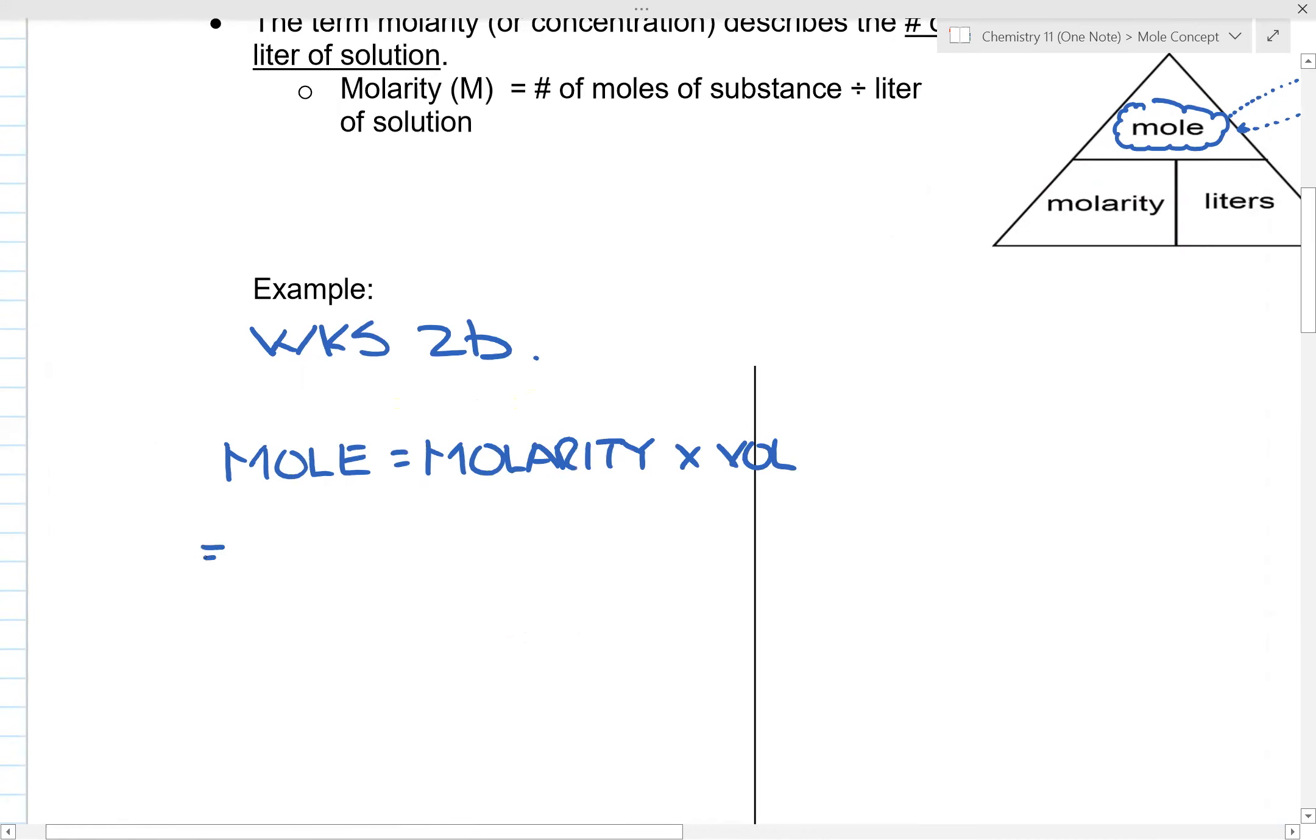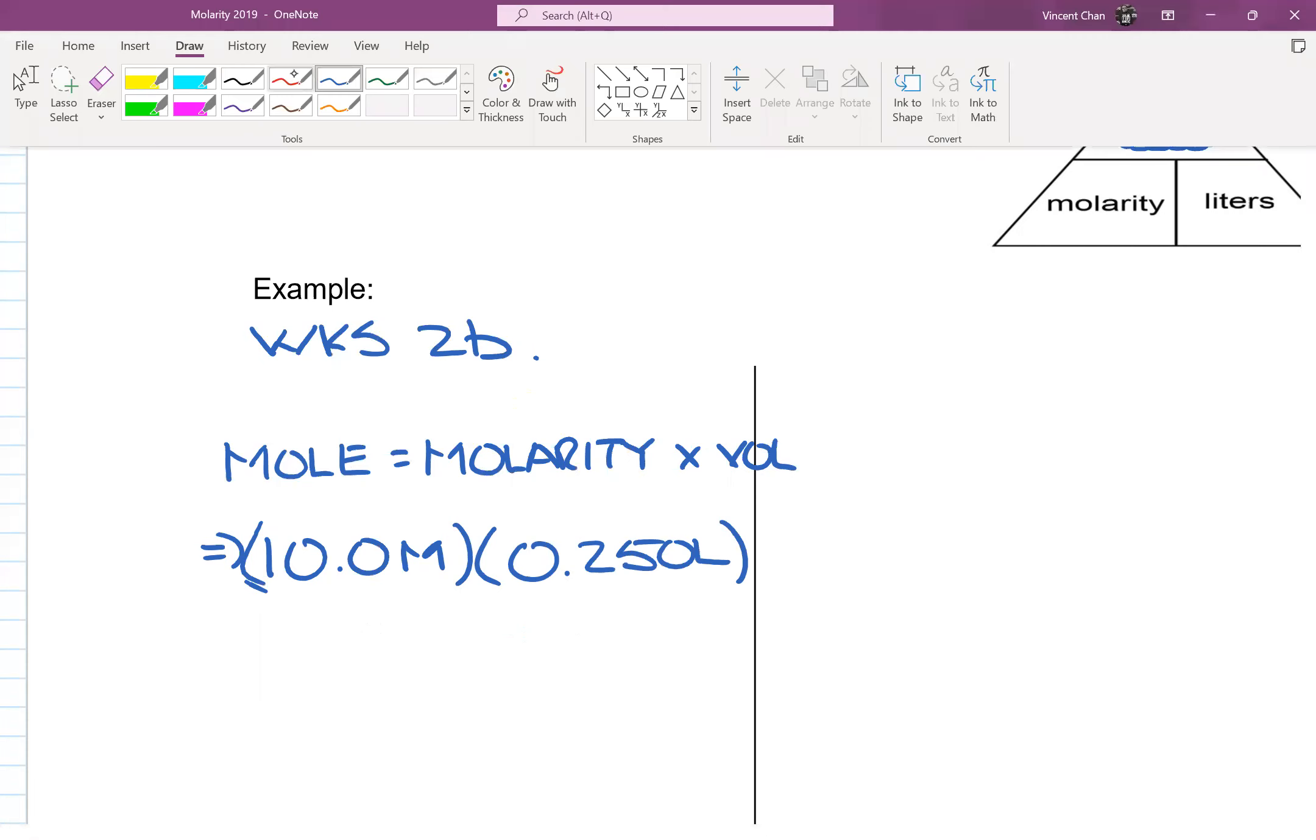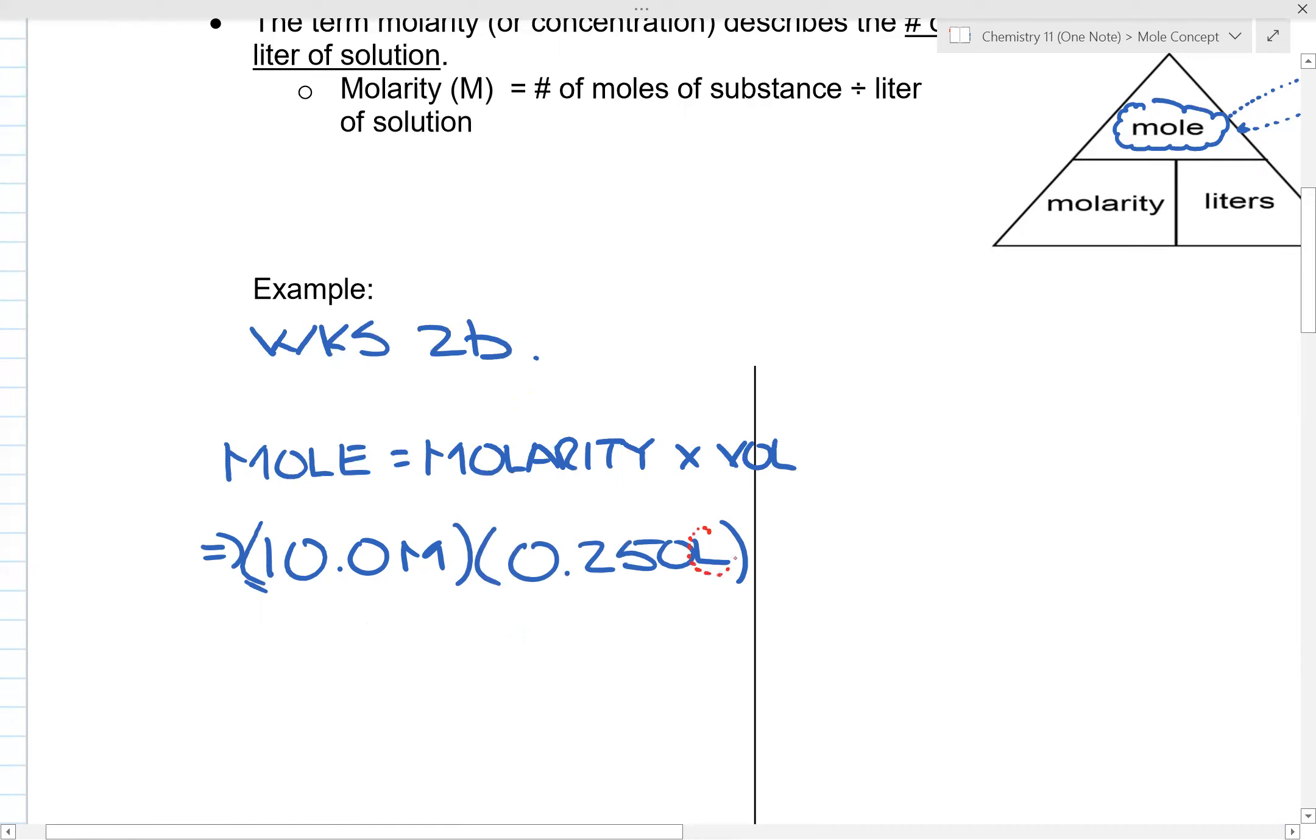I'm just going to move it over here. Molarity is given to you as 10.0 M, so M is the units of molarity. We multiply it by the volume, which is 0.250 liters. Notice here I changed the units of milliliters to liters. Please be aware of that. When I multiply together, what do I get as an answer? If you take a look at question 2b, the answer is 2.50 moles. Pretty straightforward.